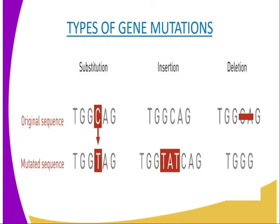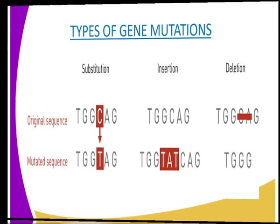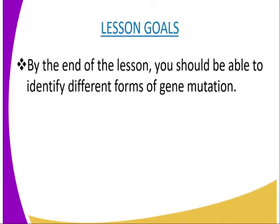Before we go to the types of gene mutation, let me do an introduction. A gene mutation involves a change in the structure of a gene. Gene mutations are also referred to as point mutations. A gene mutation arises as a result of a change in the chemical nature of the gene, which may involve some alteration in the DNA molecule. For instance, the sequence of nucleotides in a section of a DNA molecule corresponding to a particular gene may change.